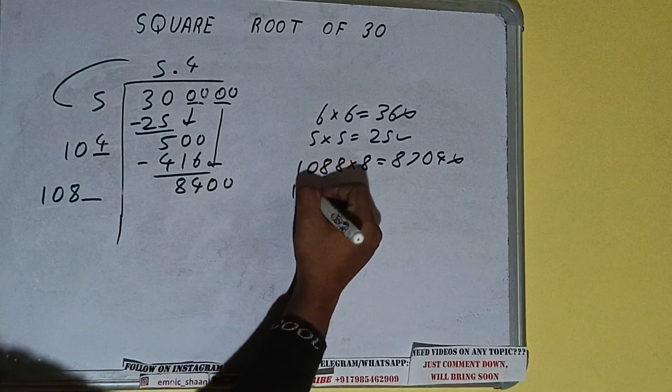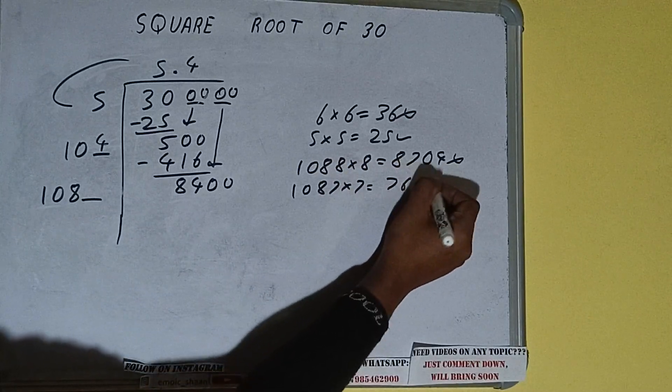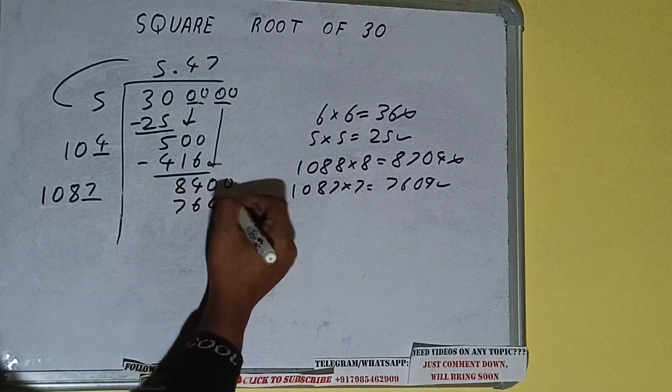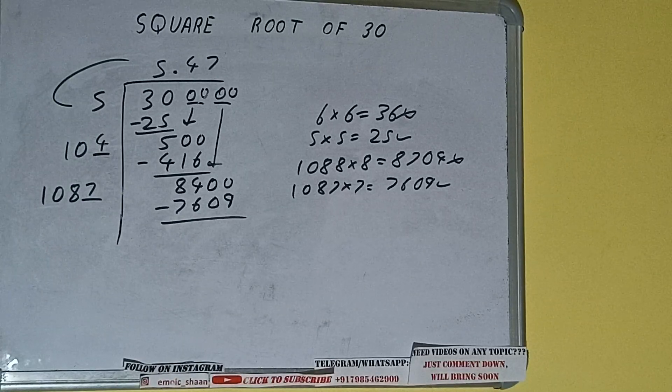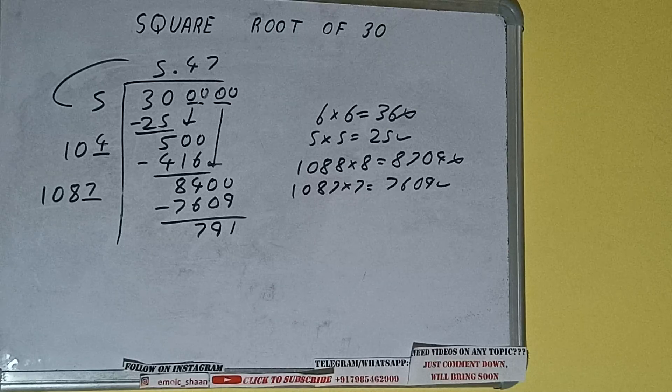1087 into 7 we can try. 7609 we'll get, which is good to take. So 7 here and 7 here, 7609, subtract, and we'll be getting 791. Now 1087